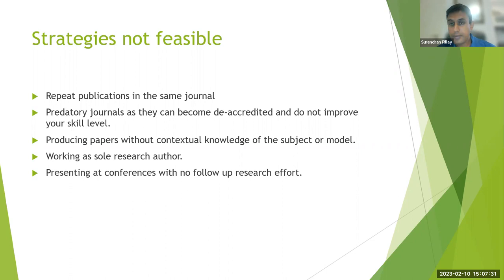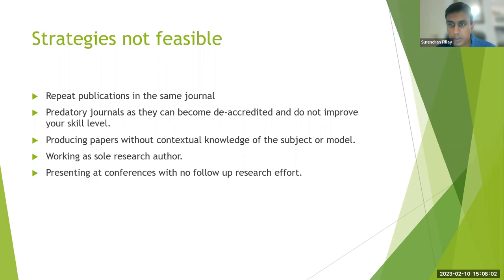Also beware of predatory journals. They're normally easy to publish in but they don't improve your skill level because there's not much review. I have published in one or two predatory journals and they don't give you the level of feedback you want. They can also become de-accredited, in which case you get penalized because you don't get your PUS. You want to publish in Q1, Q2, or Q3 journals — Q4 when starting out — those are the journals you should be targeting.